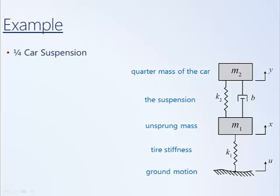U will be the motion of the ground. Following the procedure, the first step is to identify coordinates. In this case, we are identifying the motion or displacement of M2 with the variable Y and the motion of M1, the unsprung mass, with variable X — their displacement. We've defined up to be positive.